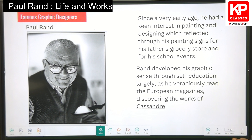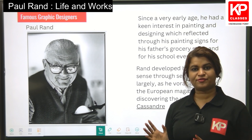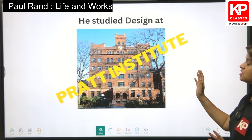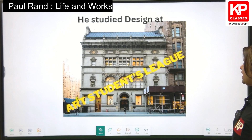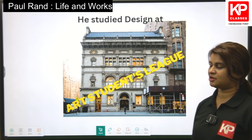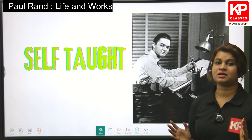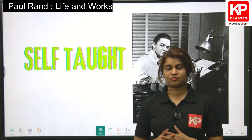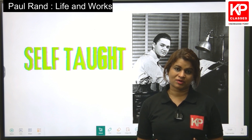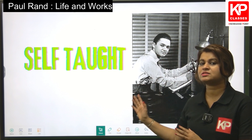Rand developed this graphic sense through self-education largely, as he voraciously read European magazines, discovering the work of Cassandra. He was a self-taught person, although he went to some iconic design colleges like Pratt Institute, Parsons School of Design, and Art Students League. He definitely went into these design colleges, but basically he was a self-taught designer. This is true for most of us — although we go to different design schools for formal education, the most part of our learning happens by doing things on our own, by exploring things on our own.